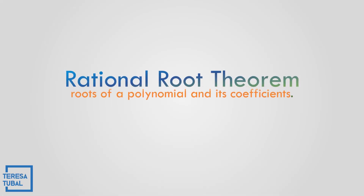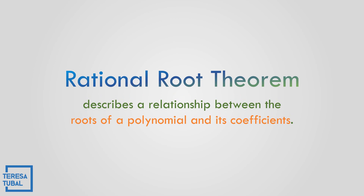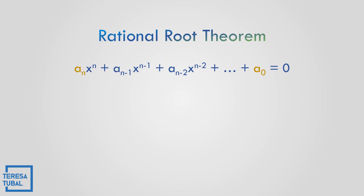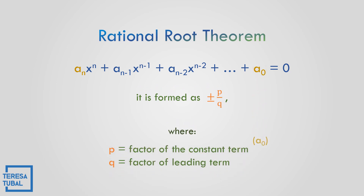What is Rational Root Theorem? Rational Root Theorem describes a relationship between the roots of a polynomial and its coefficients. In a given polynomial equation, it is formed as positive or negative p divided by q, where p is a factor of the constant term a-sub-0, and q is the factor of the leading term a-sub-n.